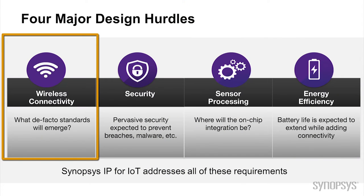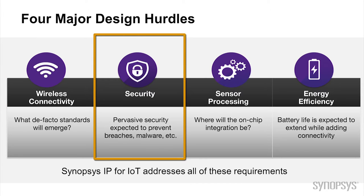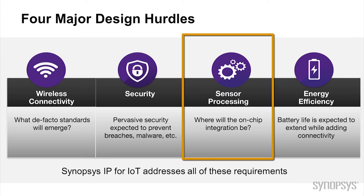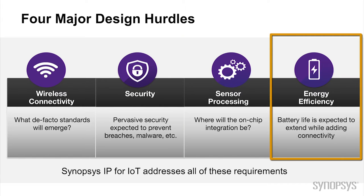It really got down to four components. First, obviously, they had to add connectivity — it needed to be interoperable. With that, there are vulnerabilities for hackers, and so security has to be added. Beyond that, there's a lot of new sensor processing being added. With these three major components, that builds a huge challenge for designers to design a very energy efficient solution, and that's one of the major hurdles we're trying to help our customers solve.